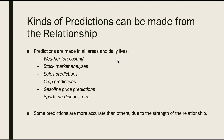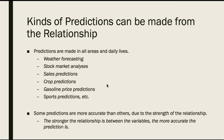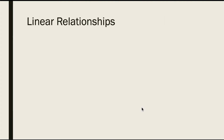Some predictions are more accurate than others due to the strength of their relationship. The stronger the relationship between two variables, the more accurate the prediction we can make. We're going to focus in this batch of videos on linear relationships. Non-linear relationships may be beyond our scope, but we're going to talk more about linear relationships here.